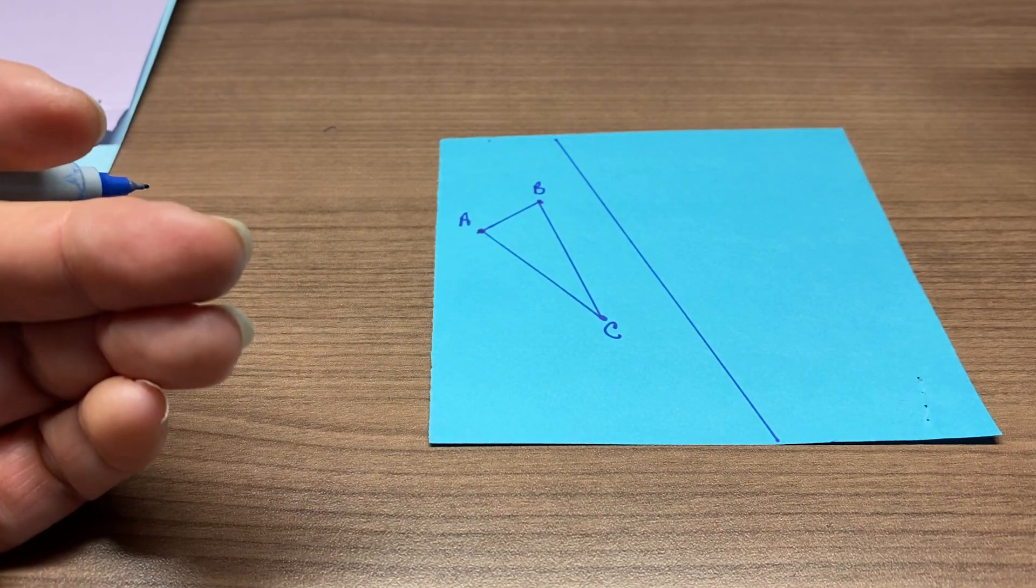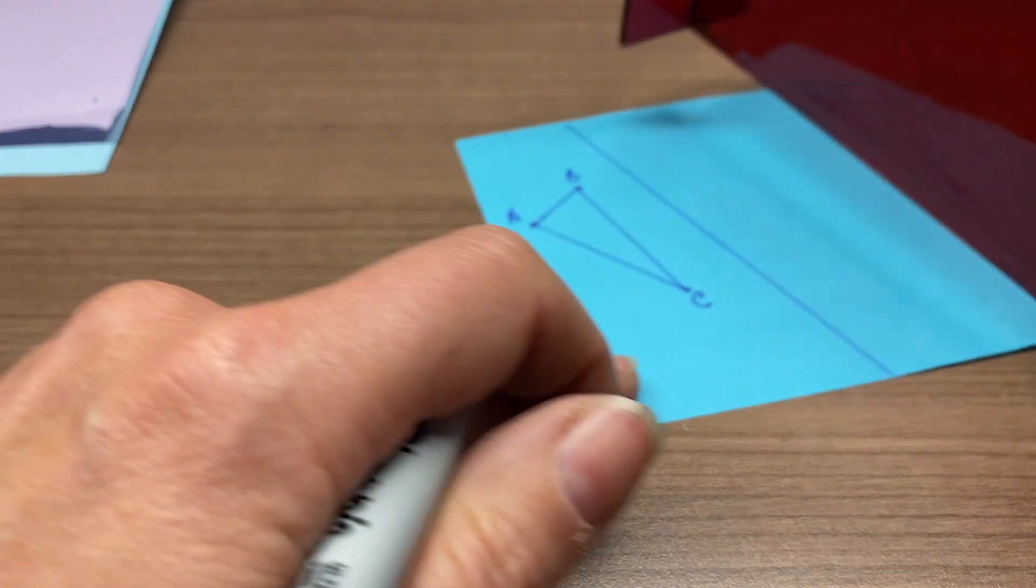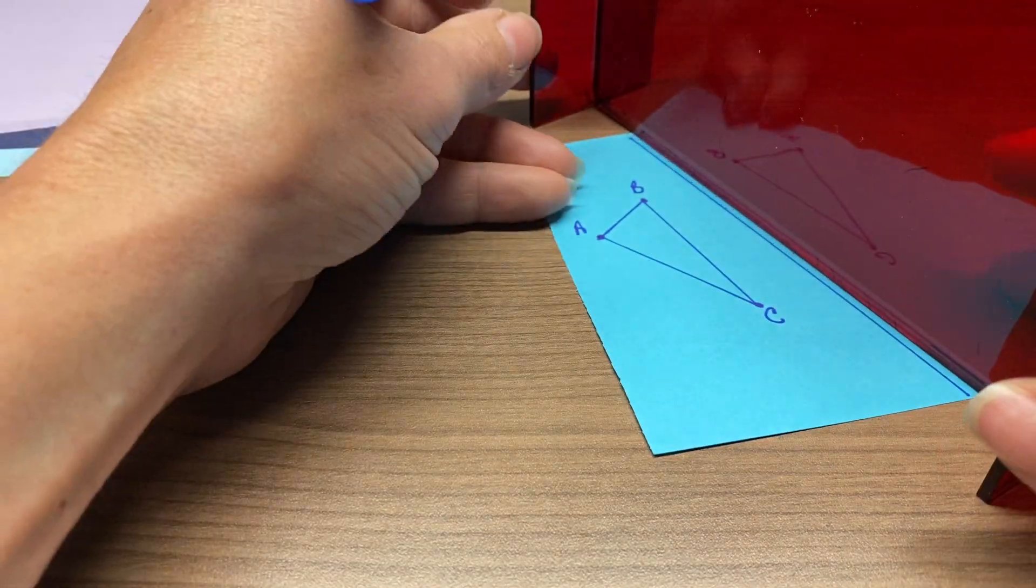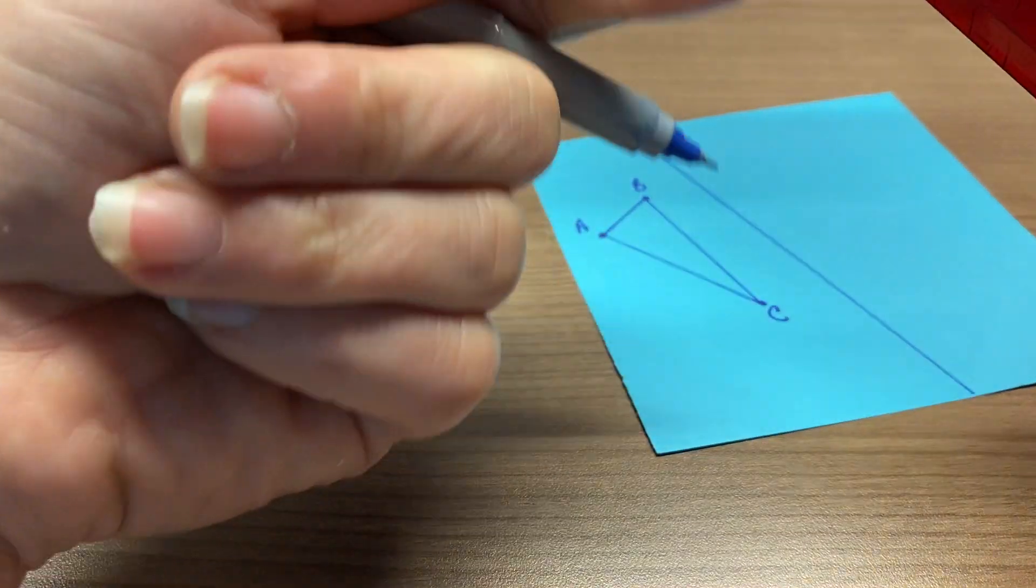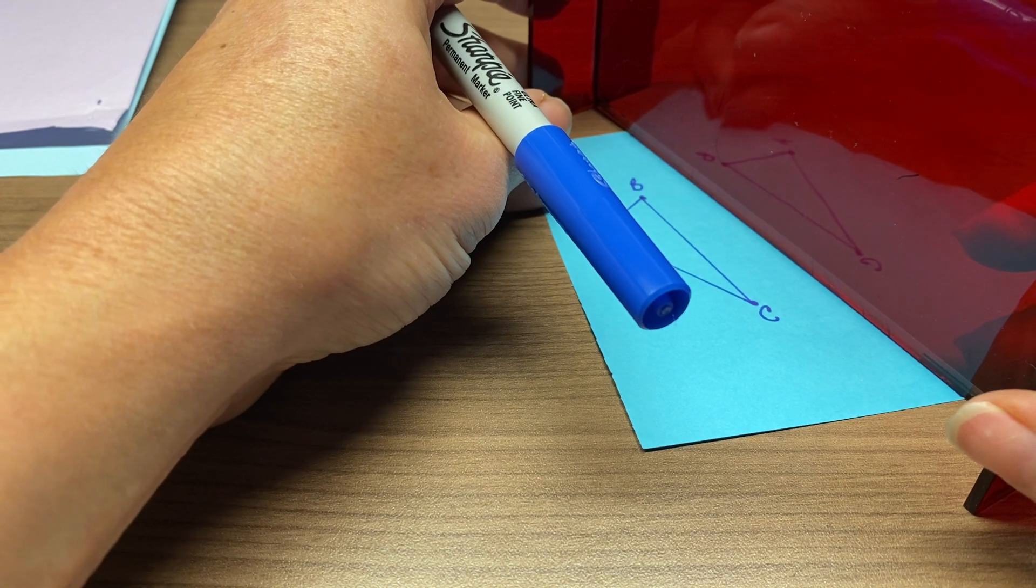All right, to complete reflections with the mirror board is very simple. So all we do is we use the mirror board, again, beveled edge down and facing you as your reflection line.